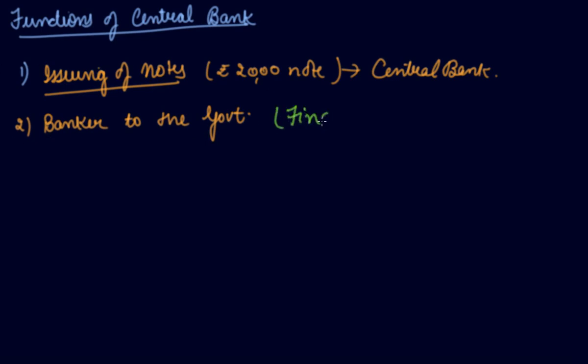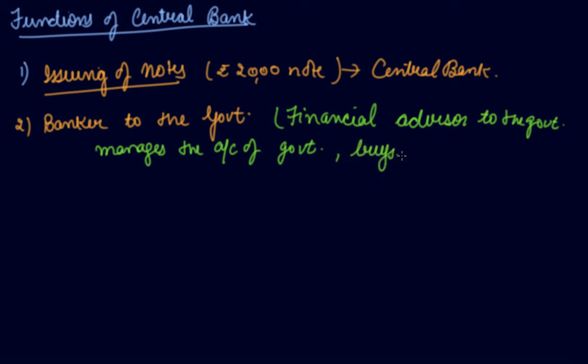The central bank advises the government on monetary policy as a financial advisor. It manages government accounts, buys and sells securities on behalf of government. All functions performed by commercial banks for the public are performed by the central bank for the government. Third is bankers bank.